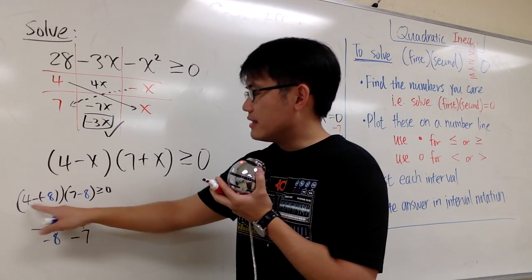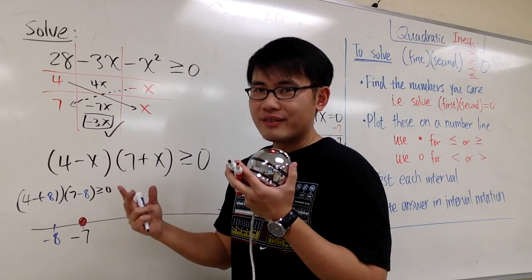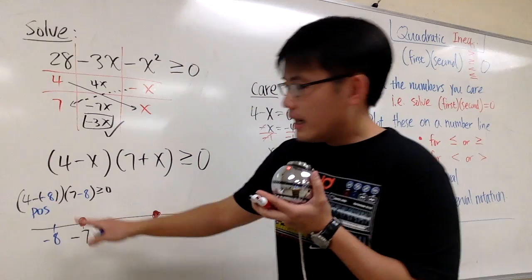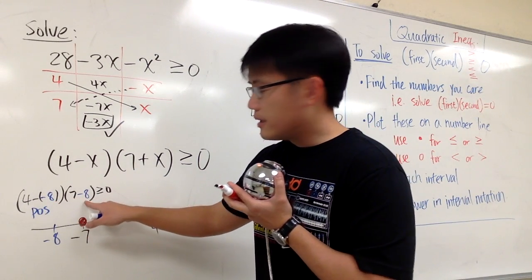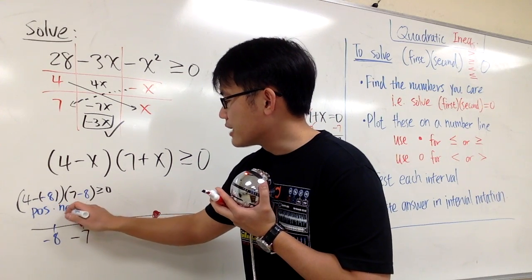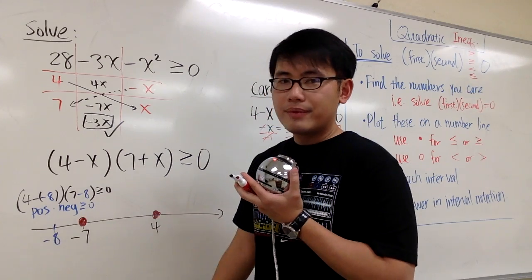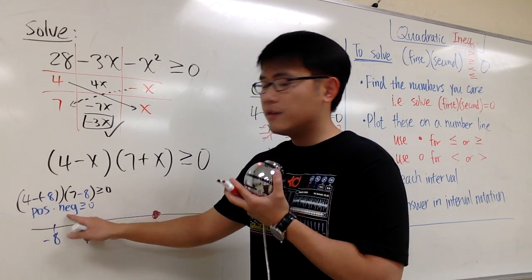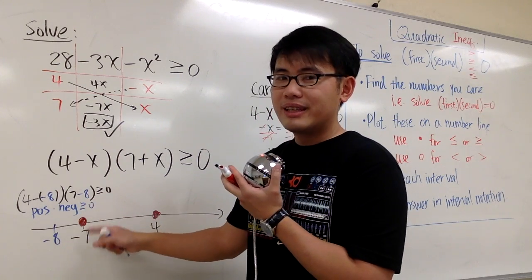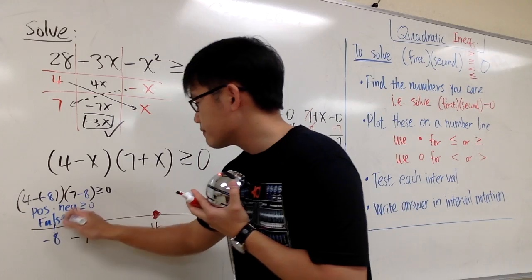4 minus negative 8 is the same as saying 4 plus 8, which is going to be 12, and more importantly, this is going to be positive 12. And then here, 7 minus 8 is negative 1. Positive times negative is negative. A negative number is not greater than or equal to 0. In other words, this part right here is false.